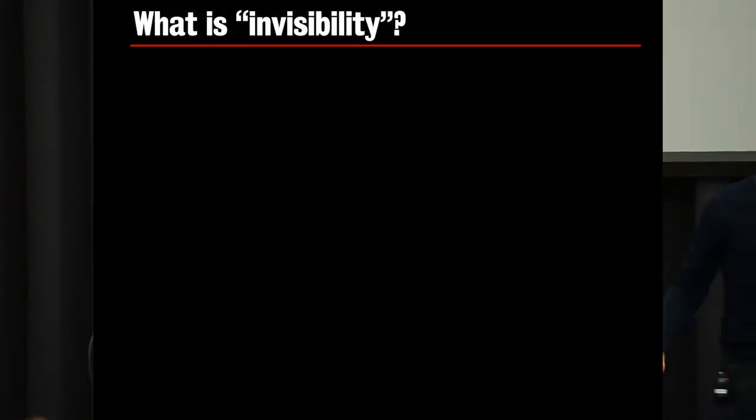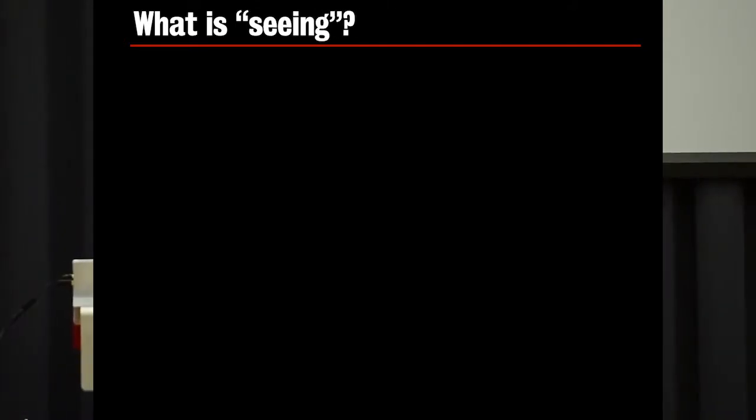So invisibility is that you don't see something. So then I would change the question, what is seeing? What do I mean by seeing? And it's not so easy to say. So if I put my hand here, you all see it. You can say you see it because it's in your line of sight. But that wouldn't really be correct, because if I turn off all the lights and it's nighttime, my hand is still in your line of sight, but you do not see it.